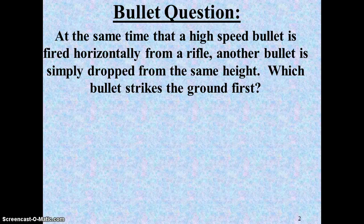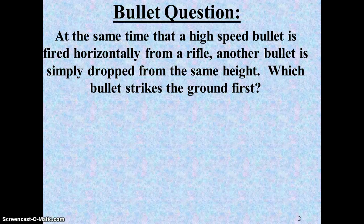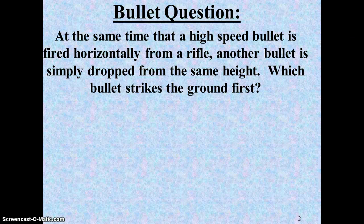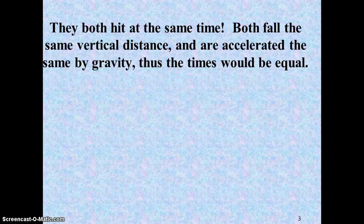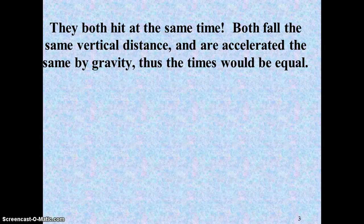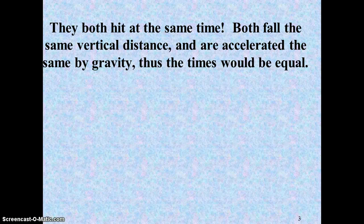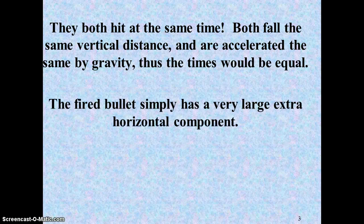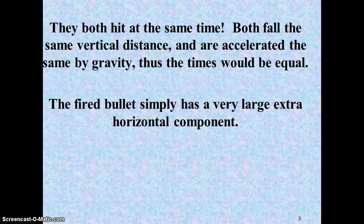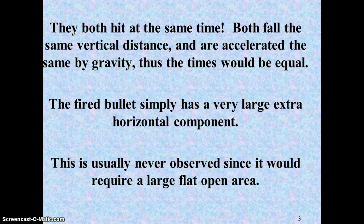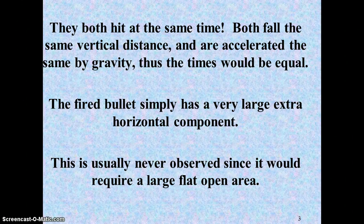We kind of went through this question the other day. Now it's with a bullet. Which bullet would hit the ground first if fired horizontally versus simply being dropped? As we went over the other day, they would hit the ground at the same time, fall the same vertical distance, accelerate by the same gravity, times would be equal. The only difference is that fired bullet would have a very large horizontal speed, hence it would hit very far away. You really couldn't see that if you had a large, flat, open area.